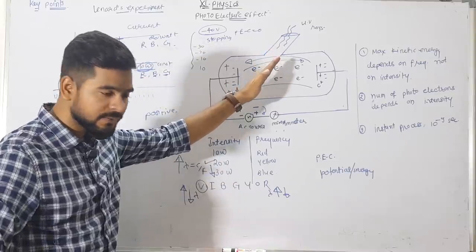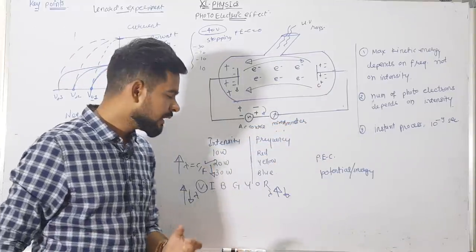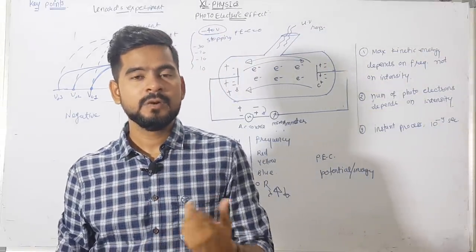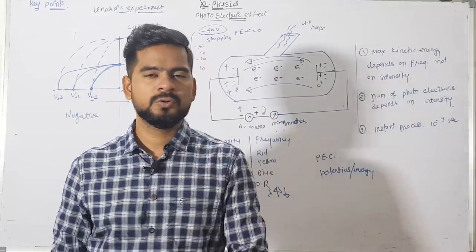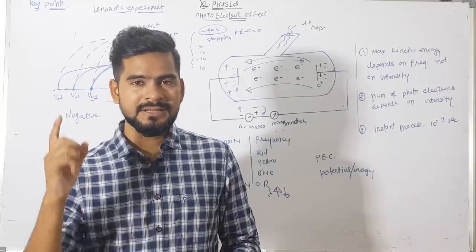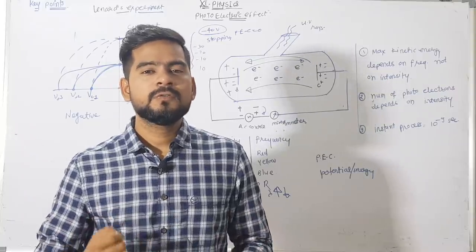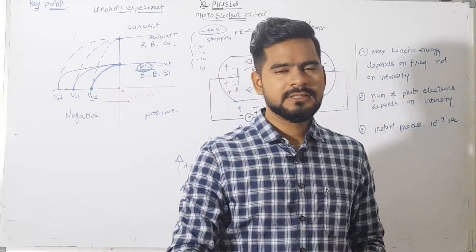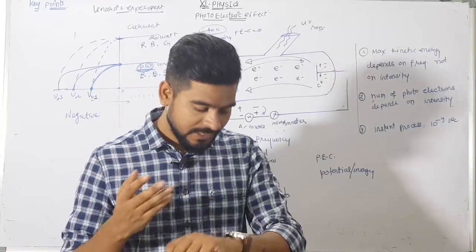Three key conclusions to remember: Number one — the maximum kinetic energy of photo electrons depends on the frequency of light, not on the intensity. Number two — the number of photo electrons is directly proportional to the intensity of the light. Number three — it is a spontaneous process; when you apply the threshold frequency, the photoelectric current is generated very fast with immediate deflection in the ammeter.